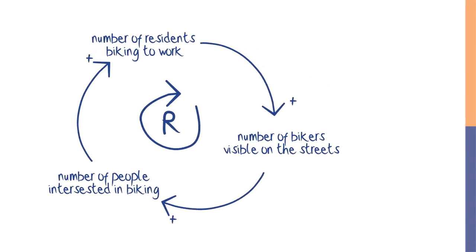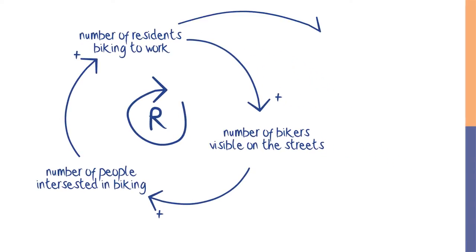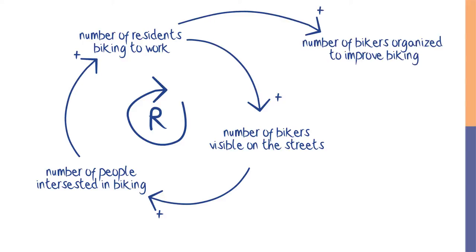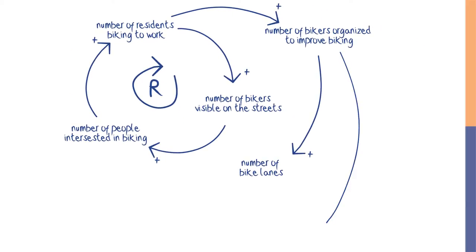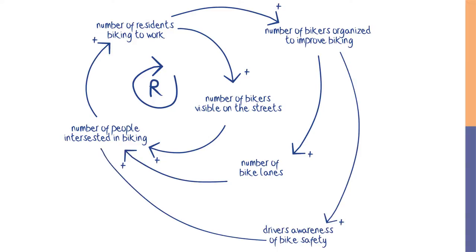Other reinforcing feedbacks come into play as well. With more people biking to work, there are more people organized to improve biking, resulting in changes like more bike lanes and more drivers who are aware of bike safety. This makes biking easier for everyone and increases the chance that an interested biker will actually become someone who bikes regularly. You can probably think of many examples from your own work and experience where an idea spreads via reinforcing feedback.